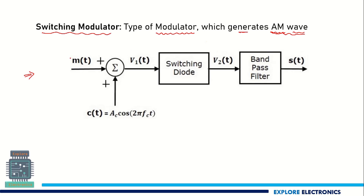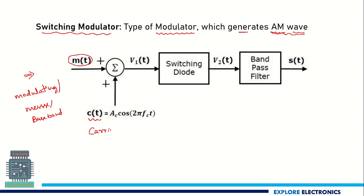You can see the circuit over here. This is M(t). As we know, M(t) is a modulating signal, or we call it a message signal, or we call it a baseband signal — all these names are the same. We call it the modulating signal M(t). This will be added up with C(t). C(t) means the carrier signal.